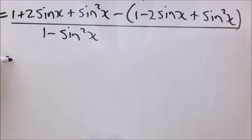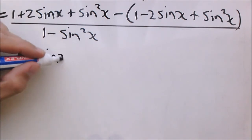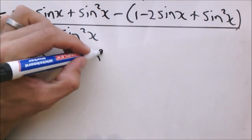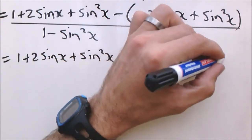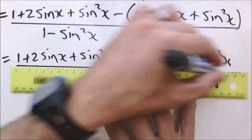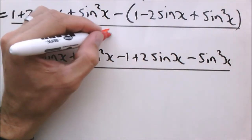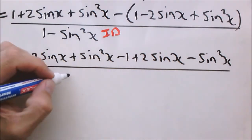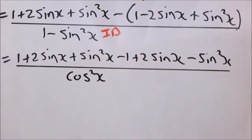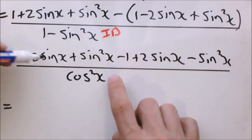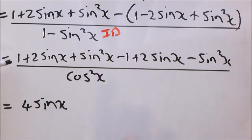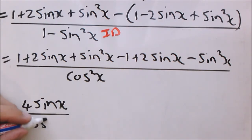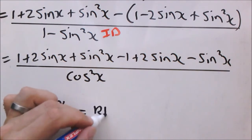Let's multiply the negative end. So: 1 plus 2 sin x plus sin squared x, minus 1 plus 2 sin x minus sin squared x. We apply the square identity, which gives us cos squared x in the denominator. Now we simplify the numerator: 1 minus 1 is 0, 2 sin x plus 2 sin x equals 4 sin x, and sin squared x minus sin squared x is 0. And this is equal to our right hand side.